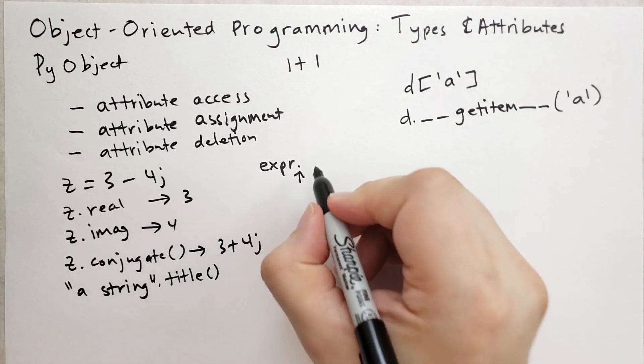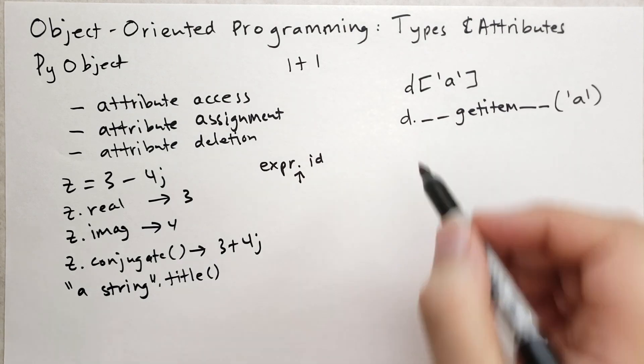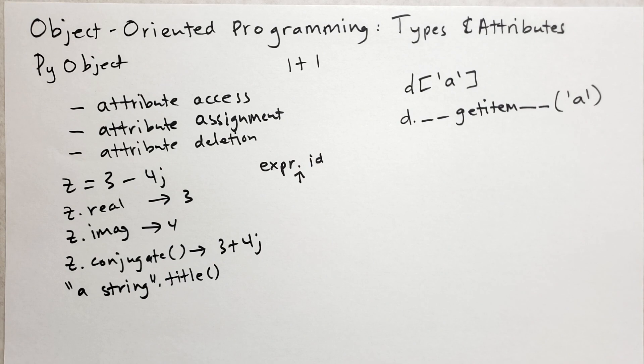And the trick is to remember that on the left side is any kind of expression. And then you have the dot and then you have some kind of identifier. The same as a variable name. It starts with a letter. It can have letters, numbers, and underscores. It can also start with an underscore, too. And that's how you access attributes. We've been doing that all along.